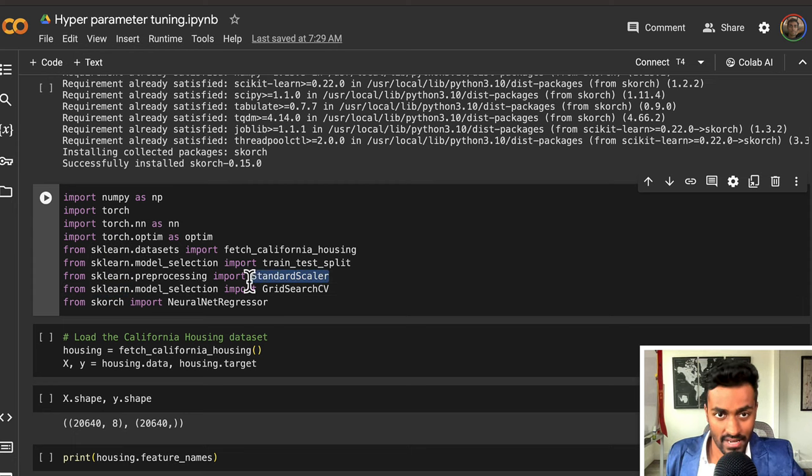Next we also import grid search CV to actually perform grid search, and this is the whole reason we need Scorch because it is a part of scikit-learn. We can scale our data with the standard scaler, split our data into train and test, use fetch California housing to get California housing dataset, and then other torch related parameters along with NumPy.